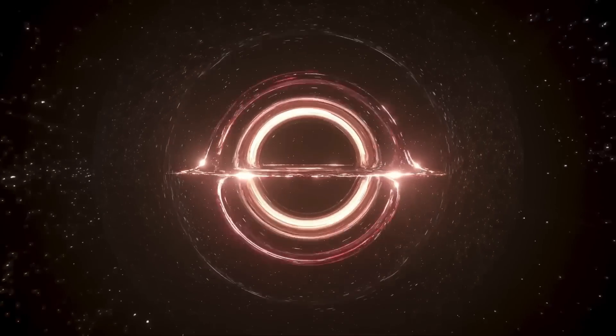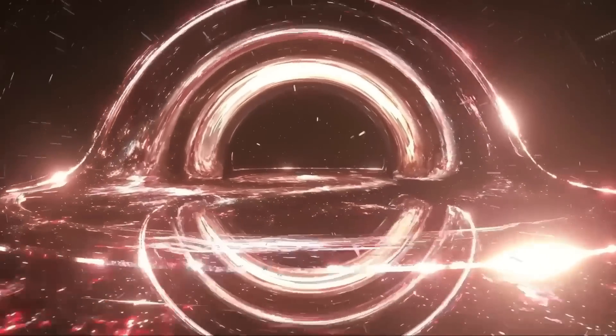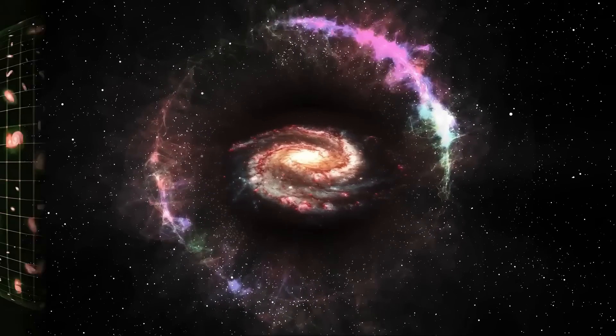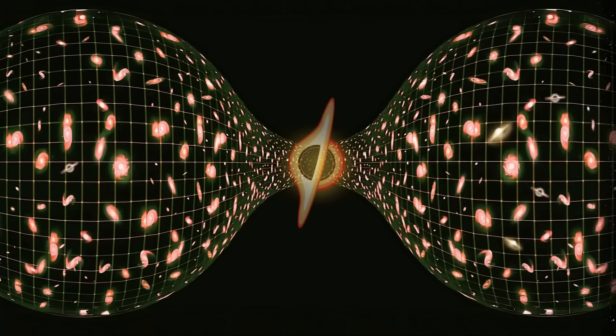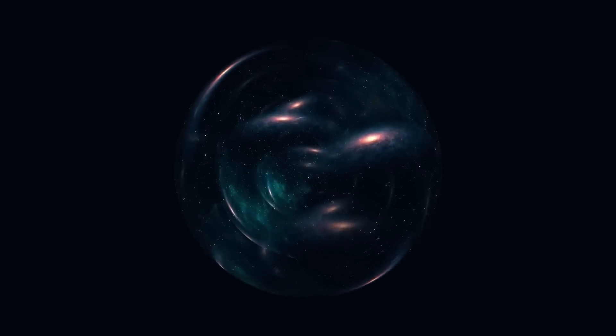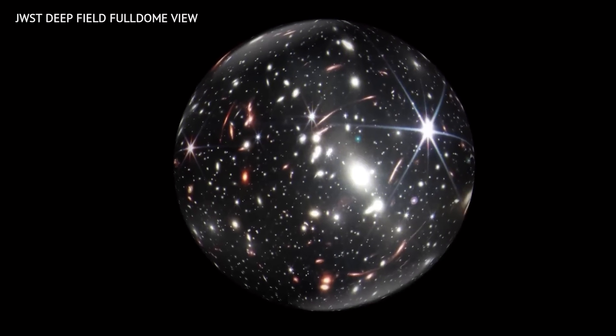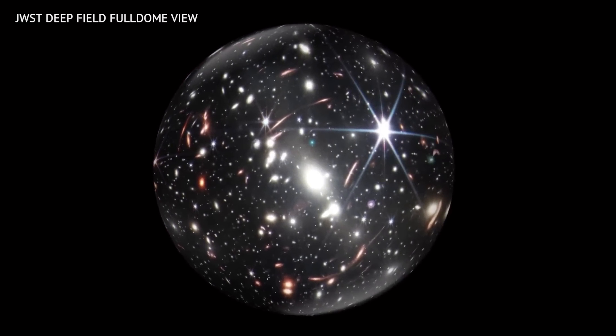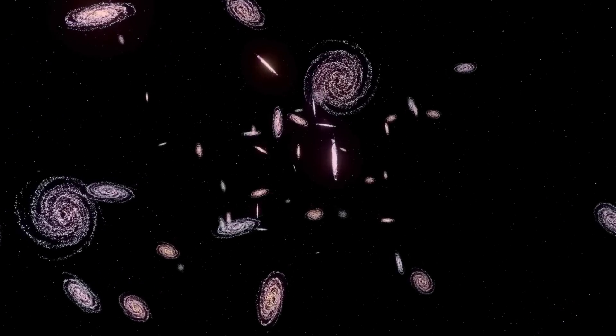Instead of a singularity exploding from nothing, it could have been a rebirth from the core of a black hole in a parent universe. This theory would drastically change our understanding of cosmic origins suggesting that the cycle of universes is an ongoing, self-replicating process. Another intriguing possibility is that the universe may have a preferred axis. Studies of large-scale cosmic structures suggest a certain alignment in the way galaxies are distributed and move rather than being entirely random.